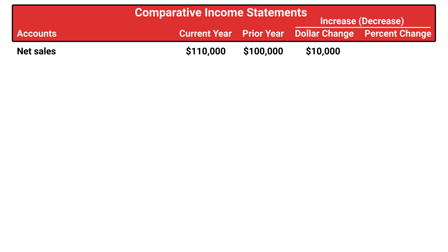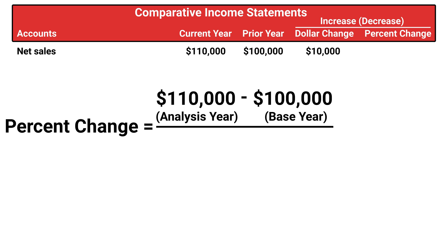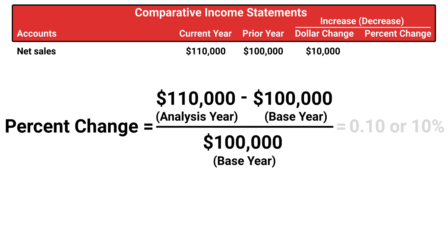Another useful computation is percent change. To do this, we take the analysis or current period amount, which in our example is $110,000, and subtract the base period amount, which in our example is the prior year amount of $100,000, and divide that difference by the base period amount, which again is $100,000. This gives us a 0.10 or a 10% change.